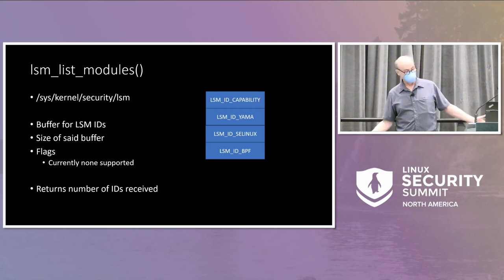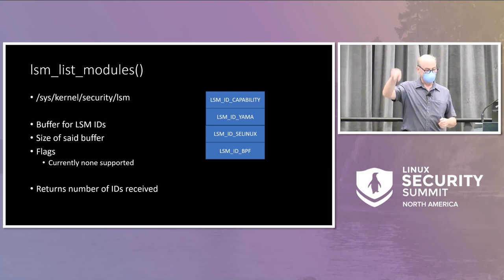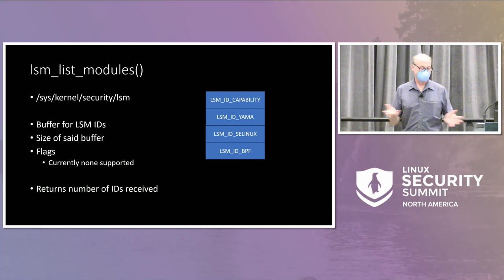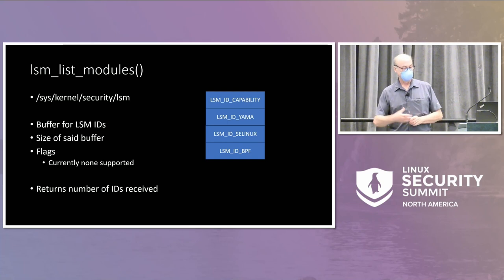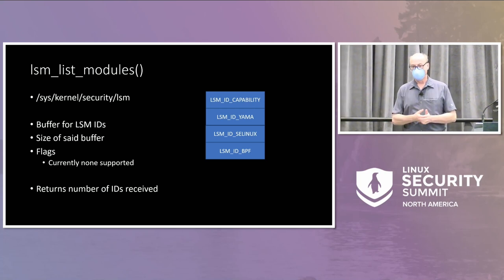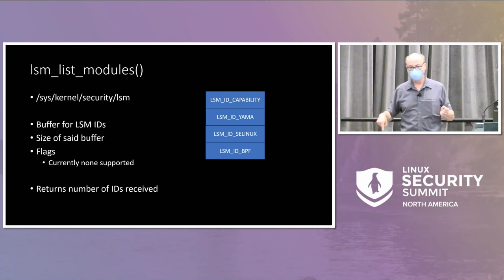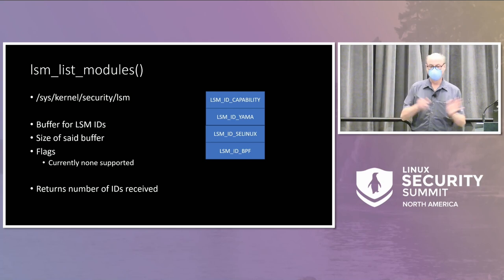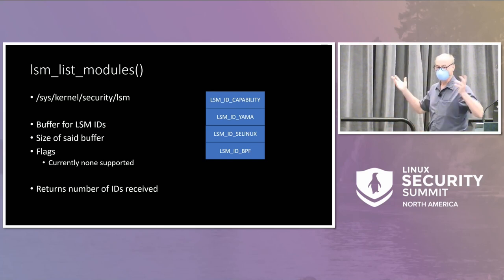So I'm now going to talk about the system calls we're actually implementing — there are three. The first one is lsm_list_modules. This simply gives you a list of the LSM IDs of the security modules that are active on the system — not necessarily the ones compiled in, since you may compile in a bunch but only activate a particular set. You send it a buffer, the size of the buffer, and flags — none are currently supported but you could use them to, say, report modules in alphabetical order instead of registration order. It returns the number of IDs received.